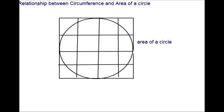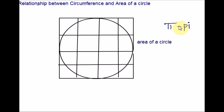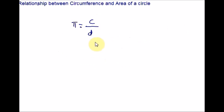Mathematicians have discovered a special number called pi. Pi is the ratio of the circumference of any circle to the length of its diameter. Pi is roughly equal to 3.14. Pi is a non-terminating, non-repeating decimal, so it is an irrational number. Since pi is the ratio of circumference to diameter, we can derive the circumference formula: C = pi times d, or C = 2 pi r.